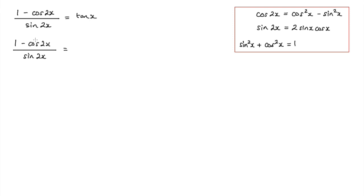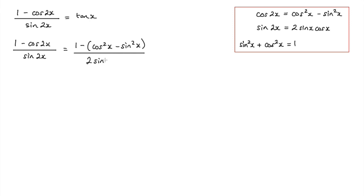Now what we can do here is take this cos 2x, use the double angle formula, and rewrite it as cos squared x minus sine squared x. So I've still got the 1, and we're going to subtract cos 2x — that is all over sine 2x. Now sine 2x we can actually write as 2 sine x cos x, so we've got 2 sine x cos x in the denominator.